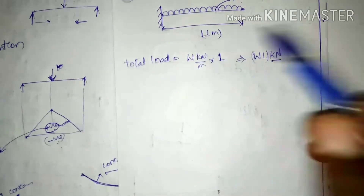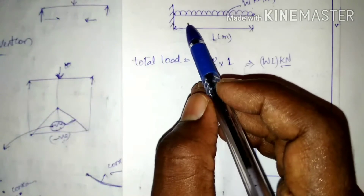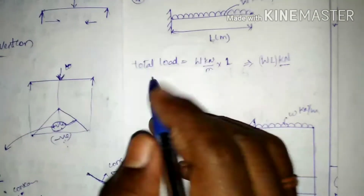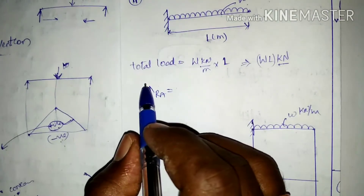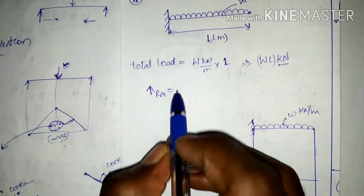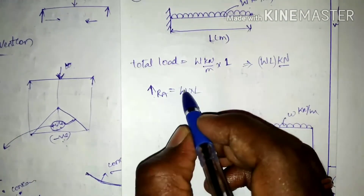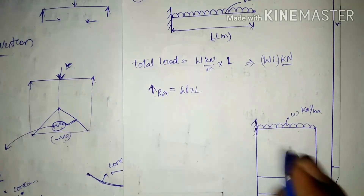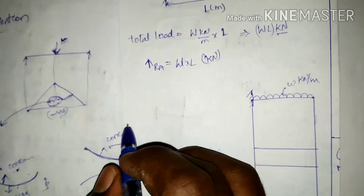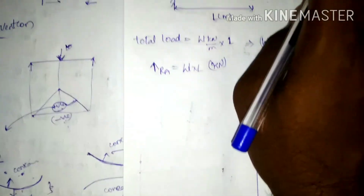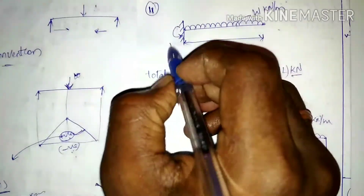There is only one reaction RA acting in the upward direction at the fixed end. Equating upward forces to downward forces: RA equals the total load W into L kilonewtons.